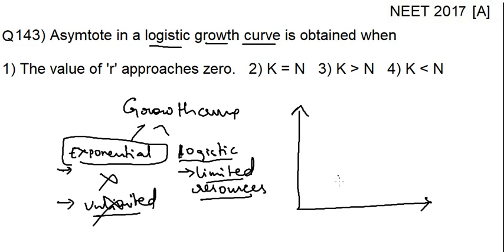For example, this is the time, this is the population. Now here, somewhere here I am writing K. Now, what do you mean by K? K is the carrying capacity.